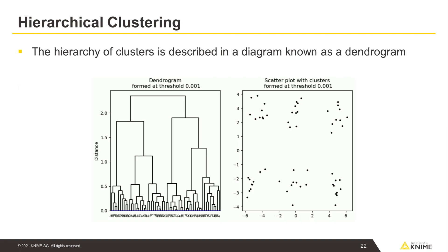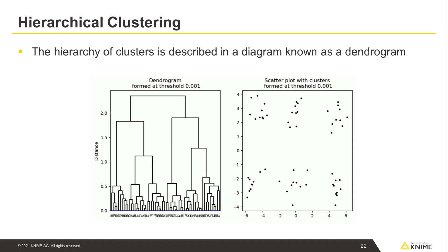Hierarchical clustering forms a hierarchy of clusters described in a diagram known as a dendrogram. A dendrogram describes which data points or clusters are connected at what distance, starting from the individual data points at the bottom all the way to the single large cluster at the top. To obtain a cluster partition with a particular number of clusters, one can simply apply a cutoff threshold at a particular distance on the dendrogram, producing the desired number of clusters.